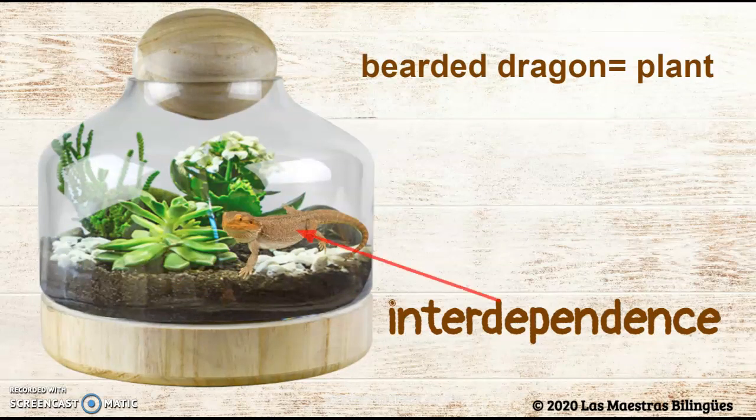Bearded dragon and plants. Plants help us breathe — they give us oxygen, just like they give oxygen to the bearded dragon. The bearded dragon, when it exhales, will give carbon dioxide to the plant, and that helps them grow. That is interdependence.